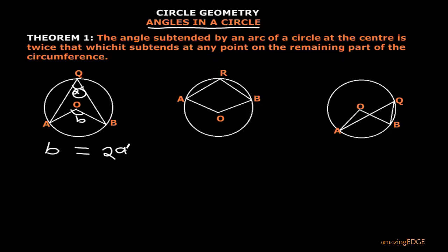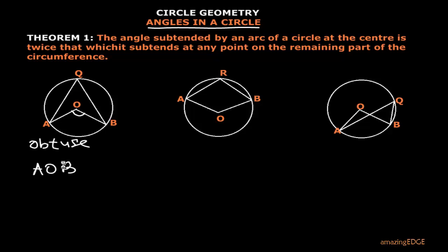Using angle notation, we can say that the obtuse angle AOB is two times the angle formed at the other point on the circumference, which is angle AQB. In this diagram, the obtuse angle at the center is two times the angle at point Q on the circumference, and both angles are subtended by the minor arc AB.